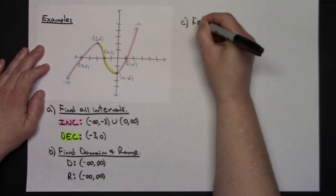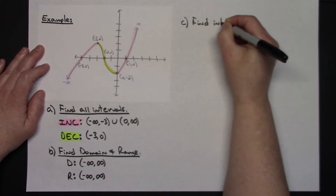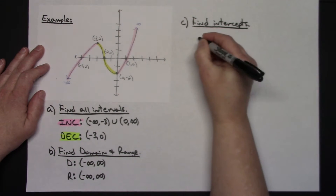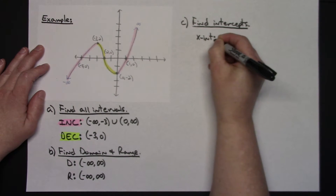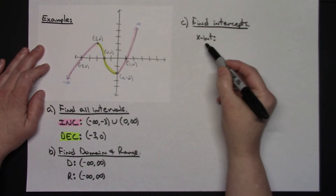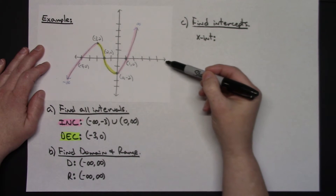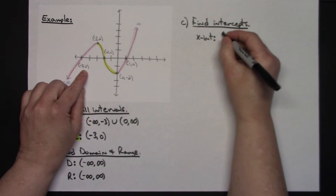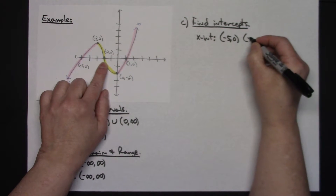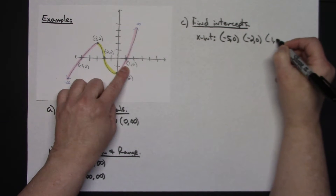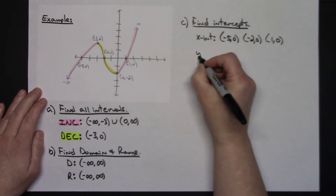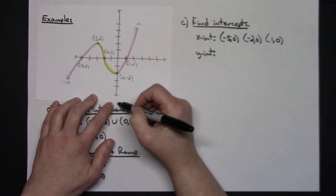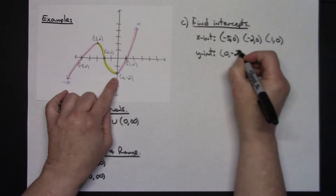Now let's find the intercepts — both x and y. Intercepts should be written as ordered pairs. X-intercepts are the points at which the graph crosses the x-axis: it crosses in three distinct points, so we have negative five zero, negative two zero, and one zero — three x-intercepts. For the y-intercept, the point at which it crosses the y-axis, I only have one: zero negative two.